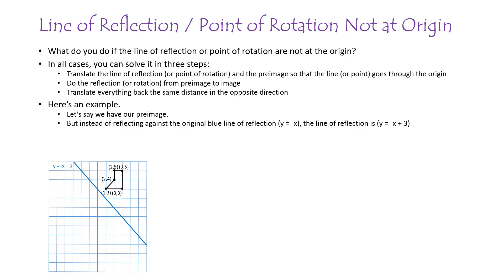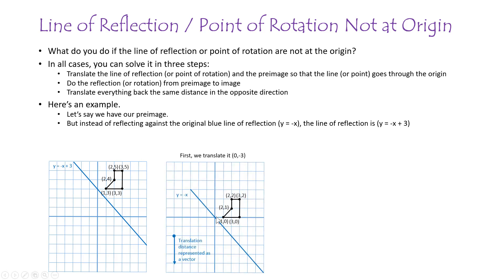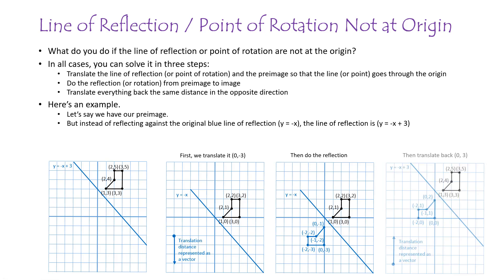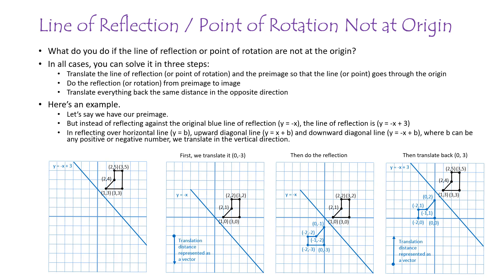Here's an example. We have our pre-image, and instead of reflecting across the regular line Y = -X through the origin, we now have a line of reflection Y = -X with a Y-intercept of 3. The first step is to translate everything down so the line now goes through the origin — the vector shows how you translated it down. Then do the reflection, then translate it back up, and it works. For horizontal, upward diagonal, or downward diagonal lines with a Y-intercept B, you always translate in the vertical direction.